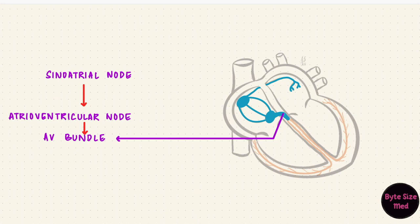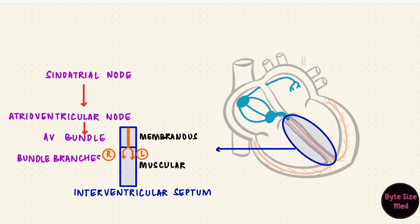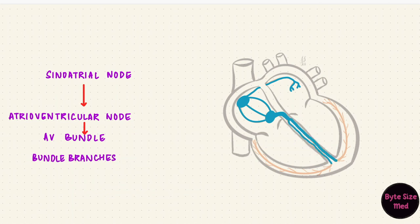The atrioventricular bundle is just an extension of the AV node and it enters the interventricular septum. This septum has two parts: a membranous part above and a muscular part below. At the lower border of the membranous septum, the bundle divides into right and left bundle branches, which travel towards the apex of the heart along the sides of the septum. The left ventricle is larger and more muscular than the right, so the left bundle branch is larger than the right. When the septum depolarizes, it does so from left to right.